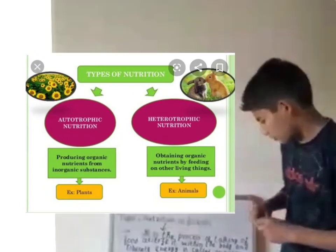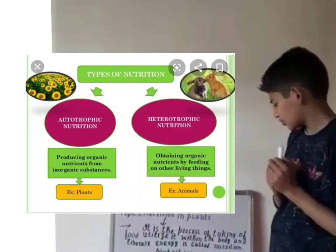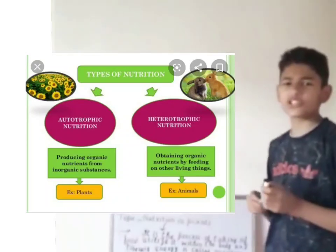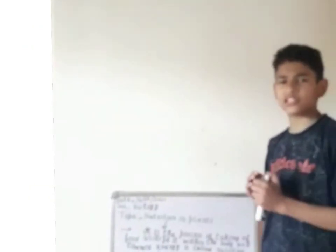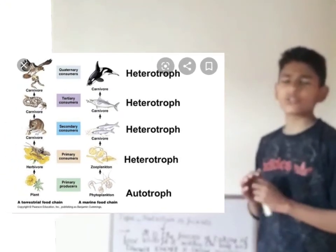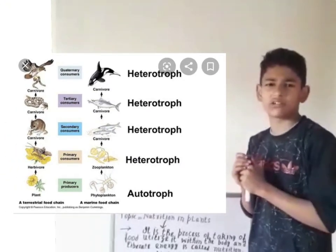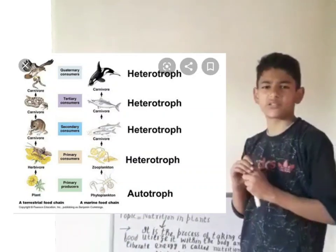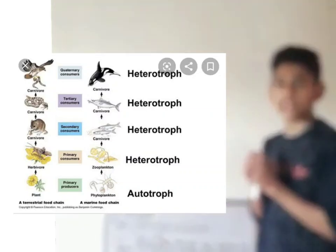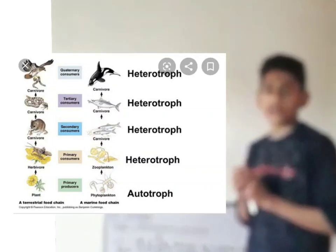If we talk about the other type of nutrition, that is heterotrophic nutrition. The word hetero is also derived from a Greek word which means other, and tropic means nourishment. Heterotrophic nutrition is a type of nutrition in which living organisms cannot manufacture their own food and depend upon other living or dead, decaying organic matter.